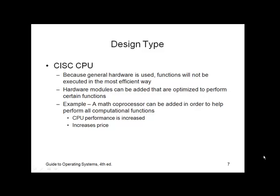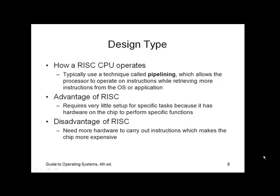Because general hardware is used, functions will not be executed in the most efficient way. However, hardware modules can be added to optimize or perform certain functions — for example, a math coprocessor, which can be added to help with computational functions. That's going to increase the price but also improve performance. By contrast, a RISC CPU operates typically by using a technique called pipelining, which allows the processor to operate on instructions while retrieving more instructions from the operating system or application. The advantage of RISC is that it requires very little software setup for specific tasks because it has hardware built onto the chip set to do specific functions. The disadvantage is that hardware makes the chip more expensive.